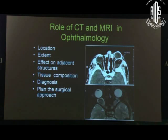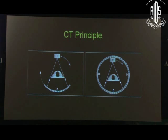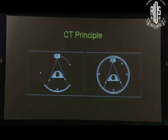Whereas in CT scan the principle is totally different. In CT scan there is a gantry which runs all around the patient, and thin collimated beams are sent through the tissues and caught individually. So the resolution is very good — it is like taking histopathological sections through the body. Slices can be varied depending on the need.